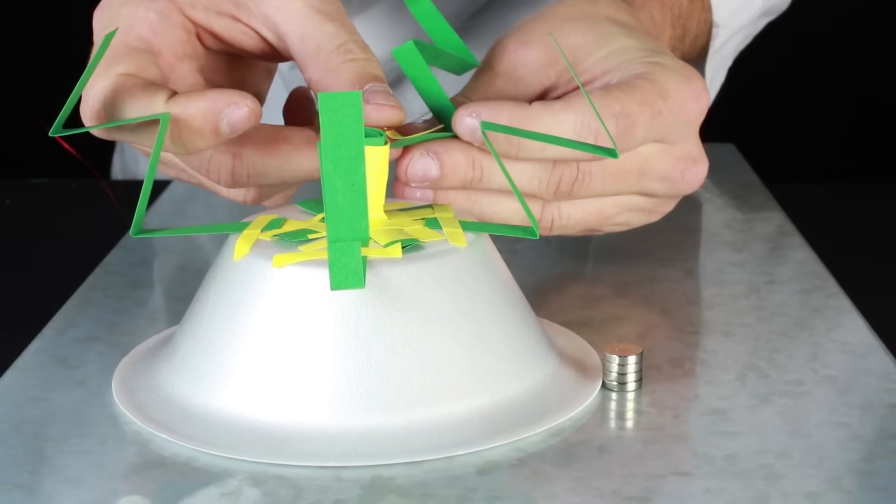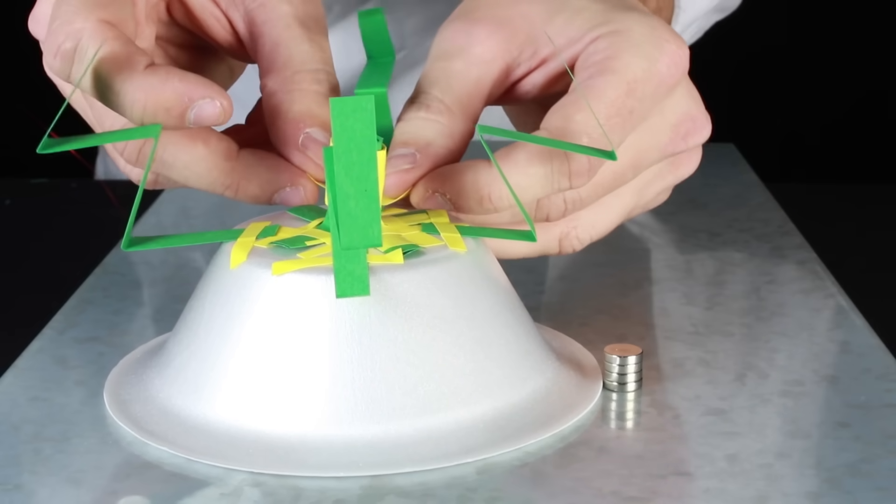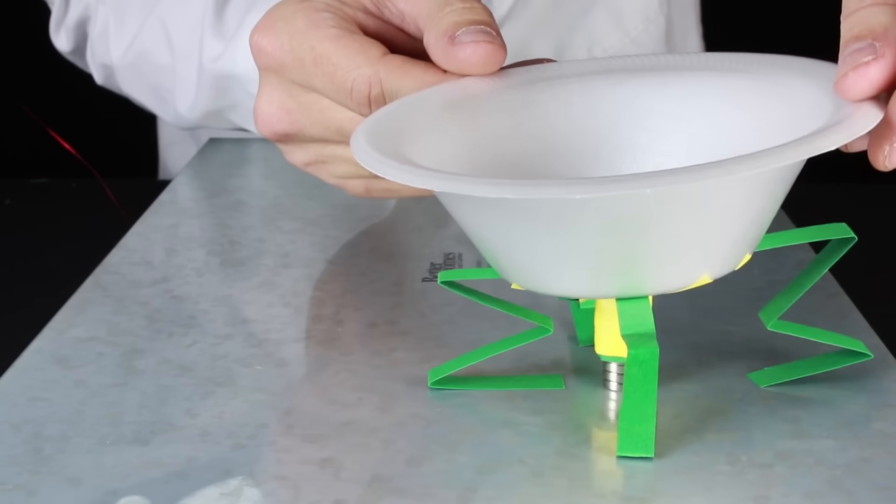Now attach paper springs to the bottom of the bowl so that the coil can slide up and down freely over the neodymium magnets.